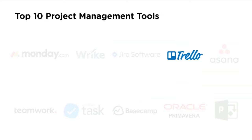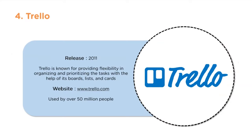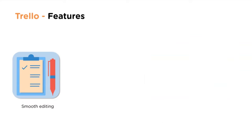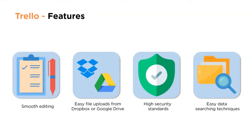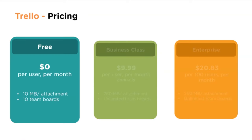Trello was released in 2011. It is known for providing flexibility in organizing and prioritizing tasks with the help of boards, lists, and cards. The website is www.trello.com, used by over 50 million people. Features include smooth editing, easy file uploads from Dropbox or Google Drive, high security standards, and easy data searching.